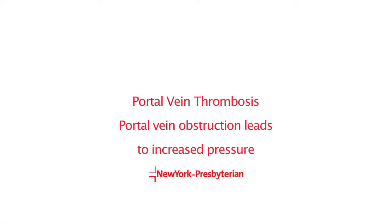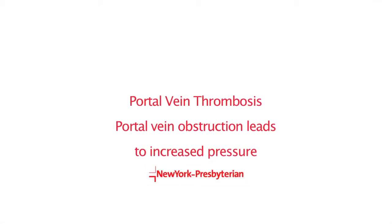The liver is an unusual organ in that it receives inflow from both an artery and a vein. Most organs in the body have an artery bringing in fresh blood and a vein removing old blood. In the liver, blood from both the artery and the vein are considered fresh blood and are brought in. 75% of that inflow is actually from the vein.